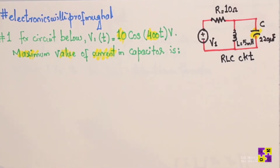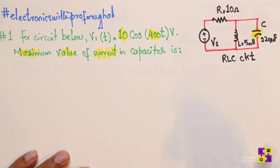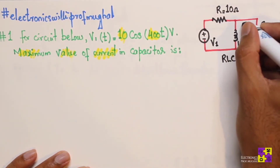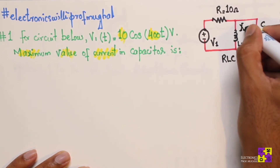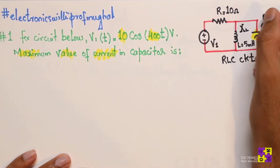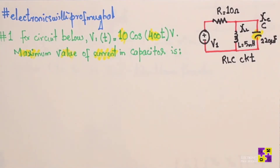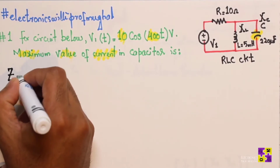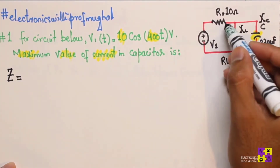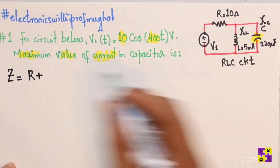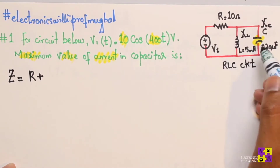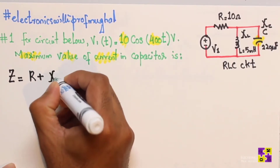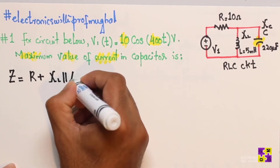We have to calculate the impedance first — the total resistance of this network. The resistance offered by an inductor is represented by XL, the inductive reactance. The resistance offered by a capacitor is XC, the capacitive reactance. The impedance Z equals R plus, since the capacitor and inductor are in parallel, XL parallel to XC.